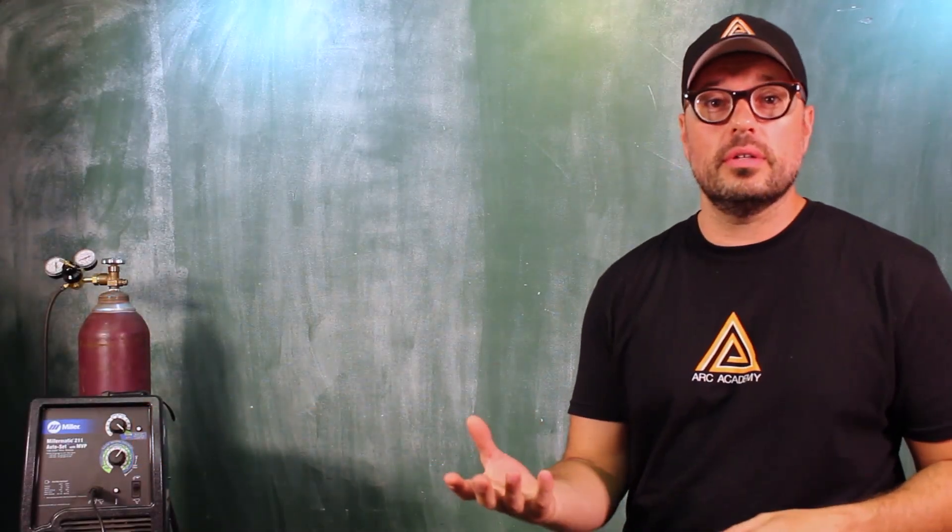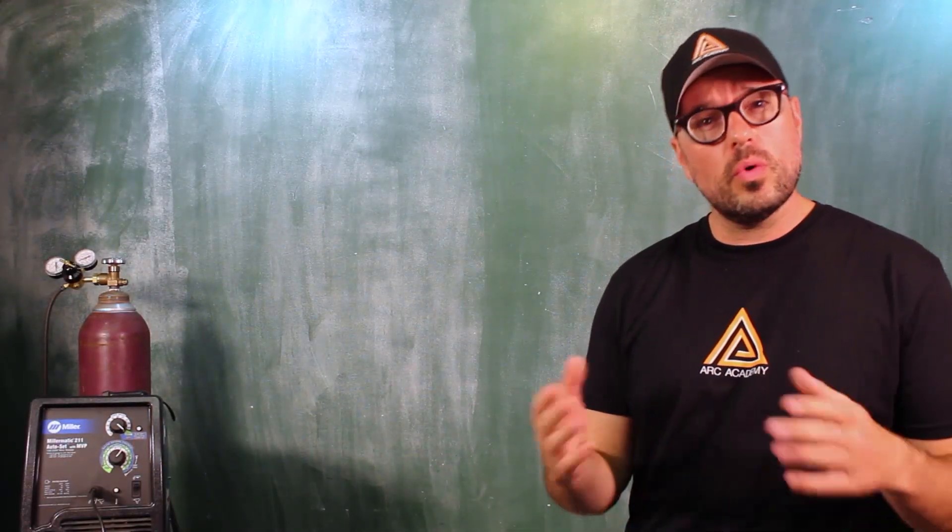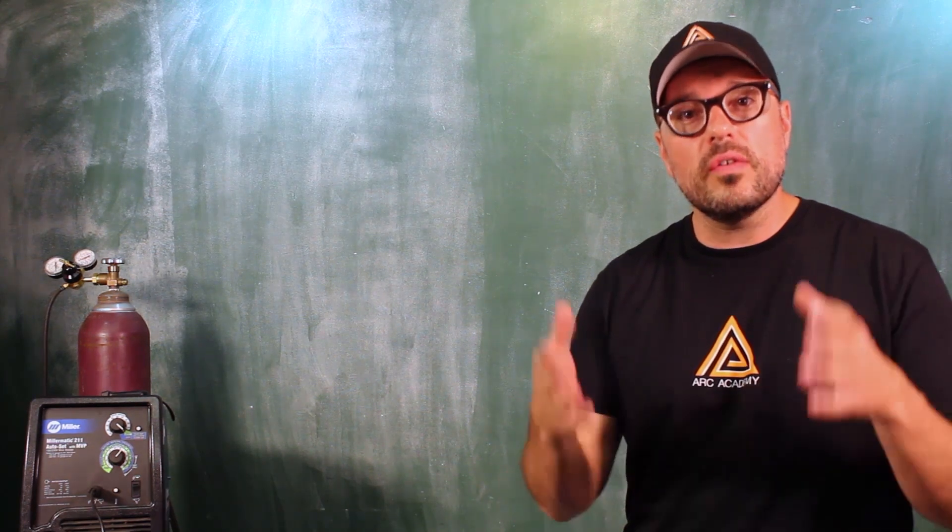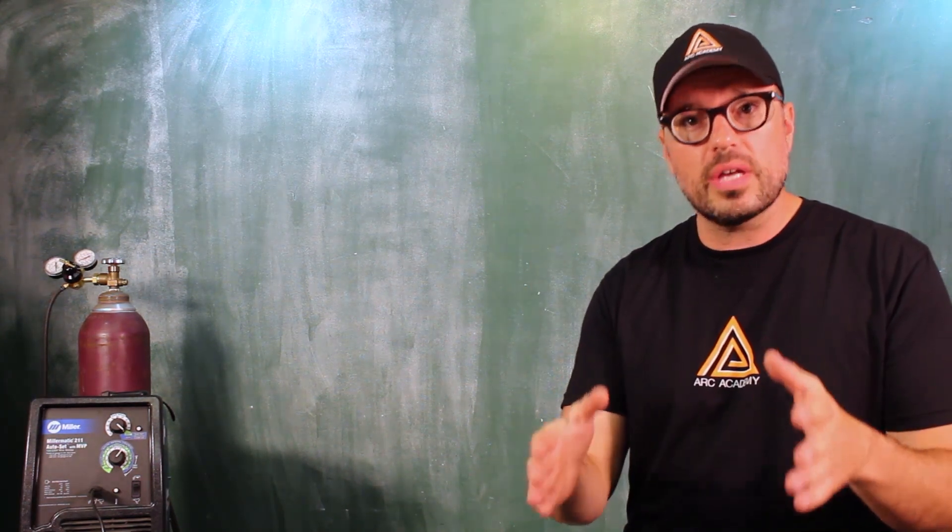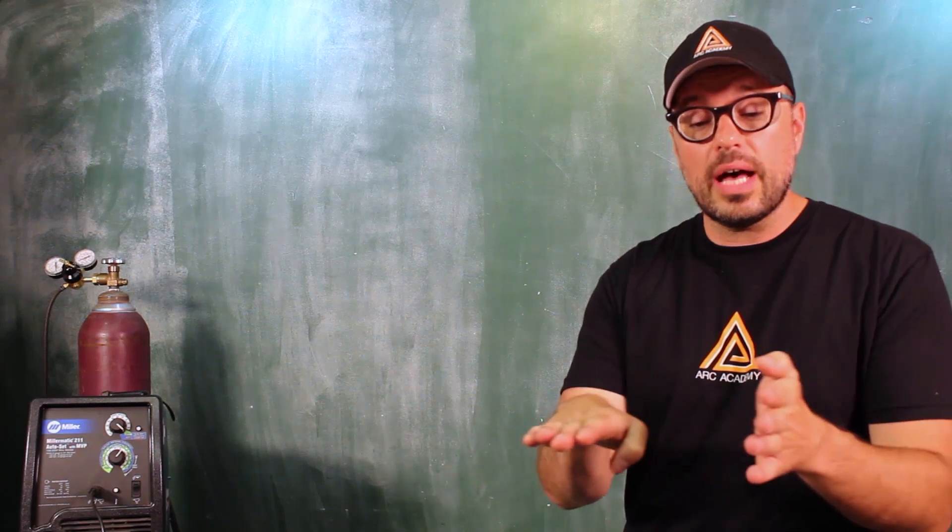Weld joints. What is a weld joint? A weld joint is the orientation or positioning of the two pieces of base metal that you're about to weld together and how they come together.